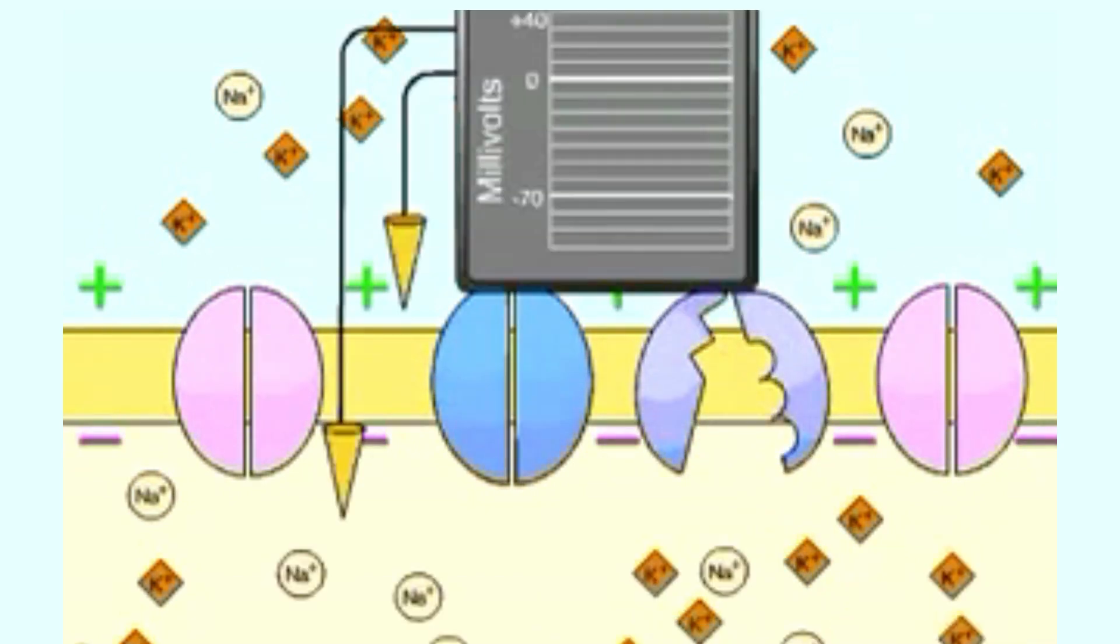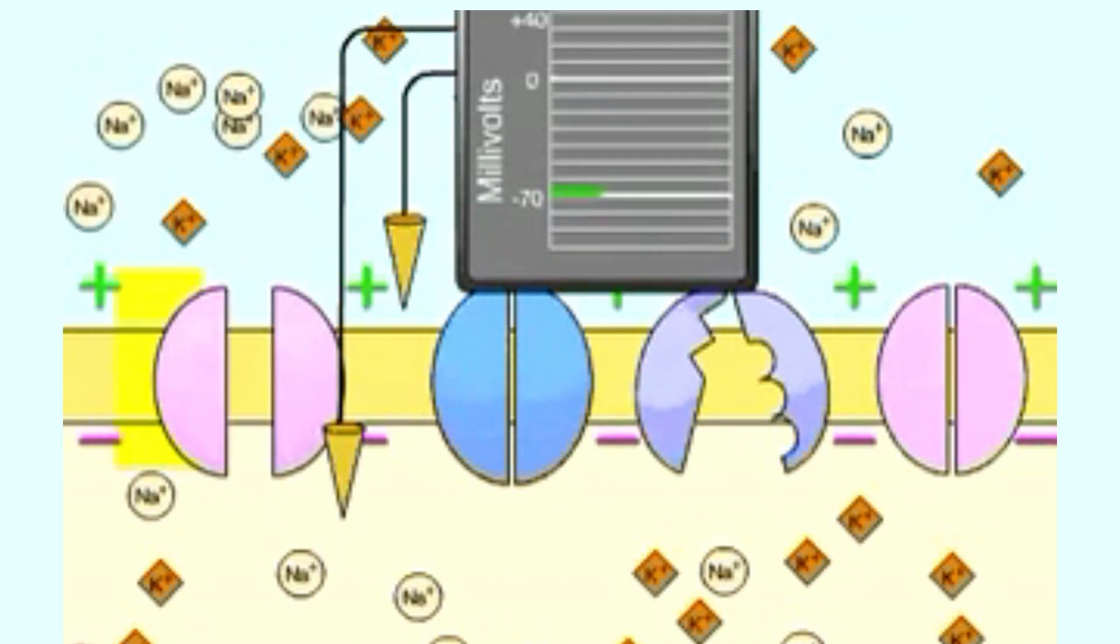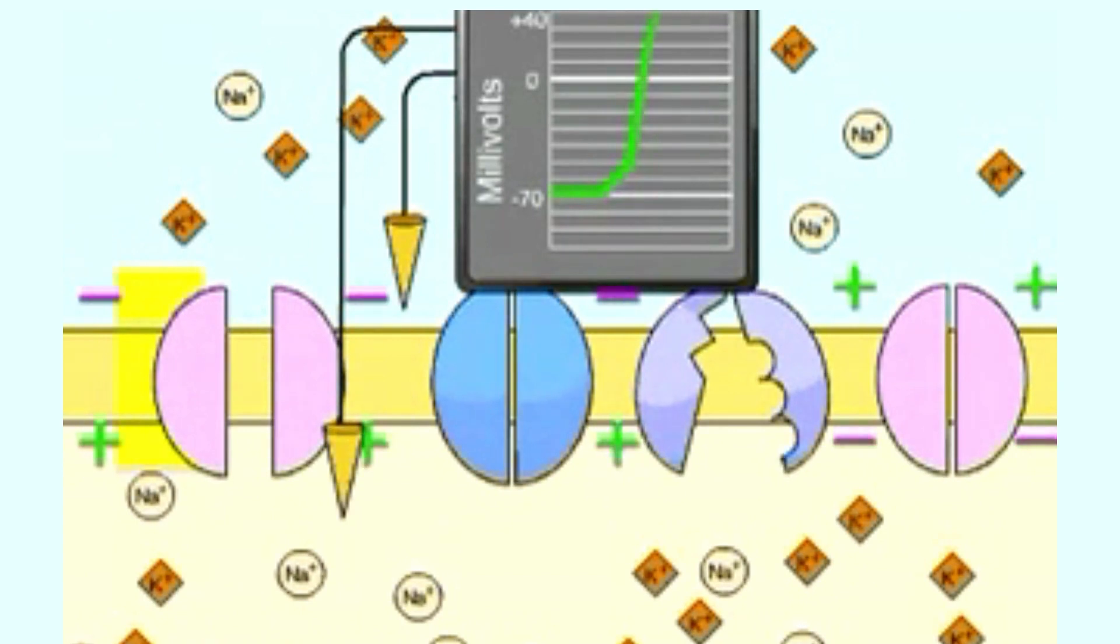Let's look at another action potential as it moves along the membrane. This time we will measure the voltage changes that occur in one spot along the membrane. A slight change in polarity causes the voltage gated sodium channels to open. Sodium ions rush in, causing a reversal in membrane polarity.